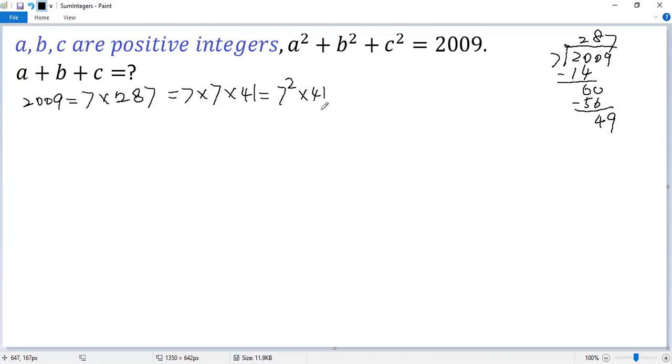So if we can express 41 as the sum of three perfect squares, then we can do the same thing for 2009.